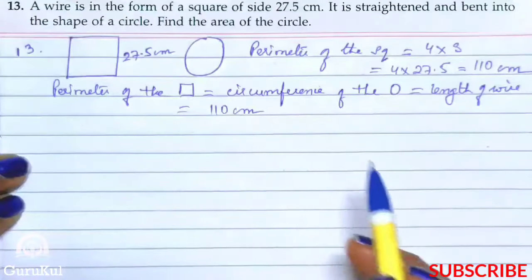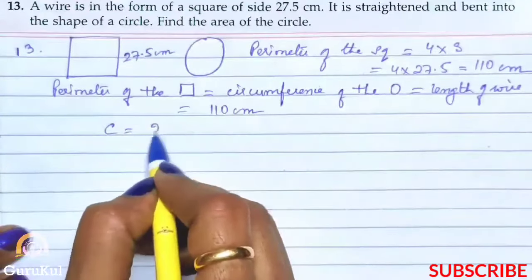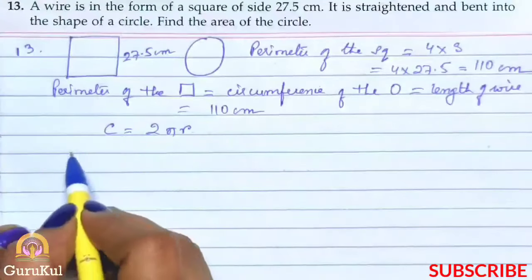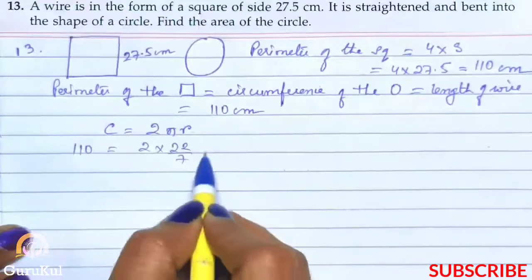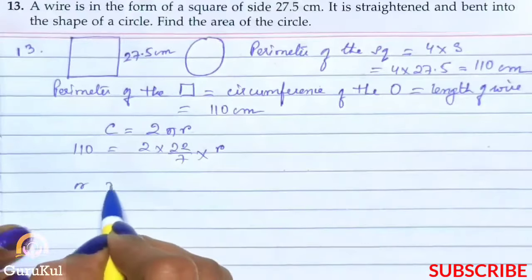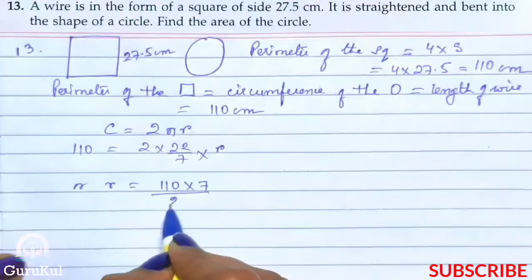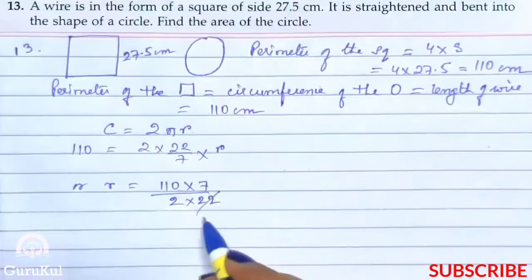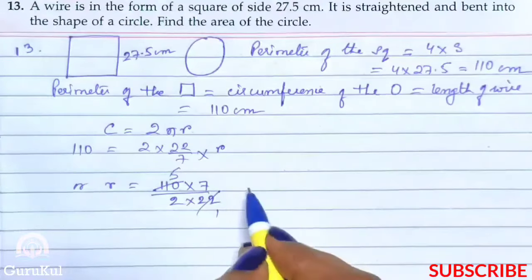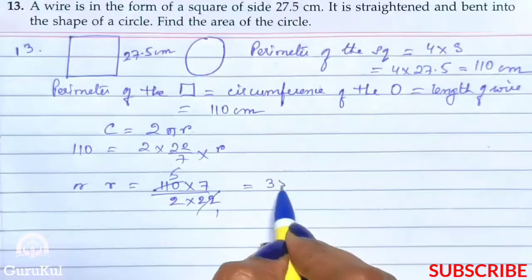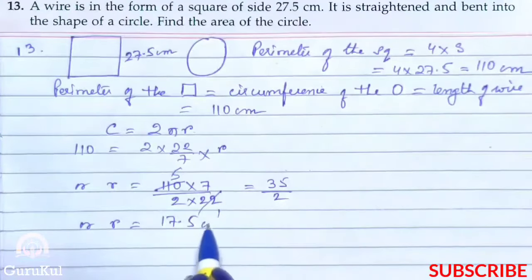So now we have got the circumference of the circle. So what is the formula? Circumference is 2πr, so 110 is equal to 2 into 22 by 7 into r, or r is equal to 110 into 7 by 2 into 22. So 22 ones are 22 and 22 fives is 110, which is 35 by 2 or radius is equal to 17.5 cm.